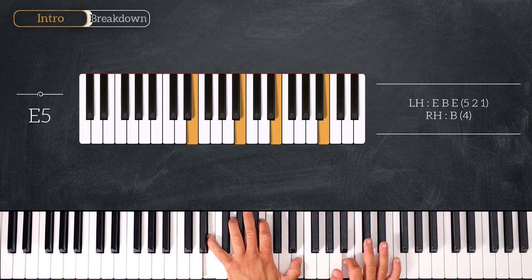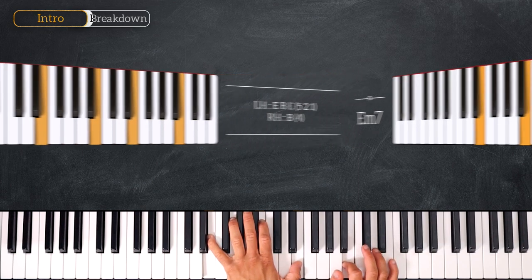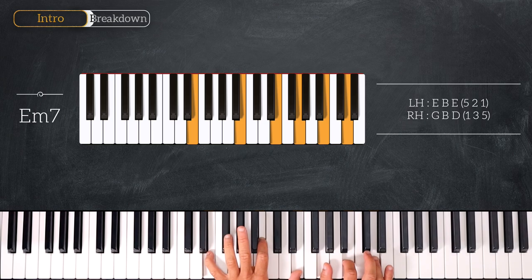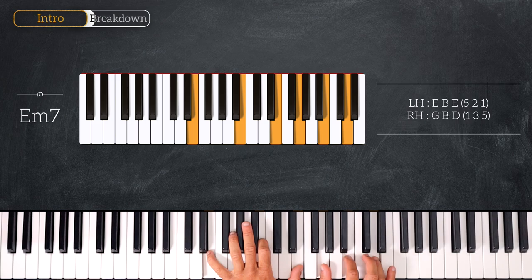And the last chord of this progression will be an E minor 7 chord. So here we've just added a G and a D to the previous chord. So it gives us E, B, E, G, D, D.